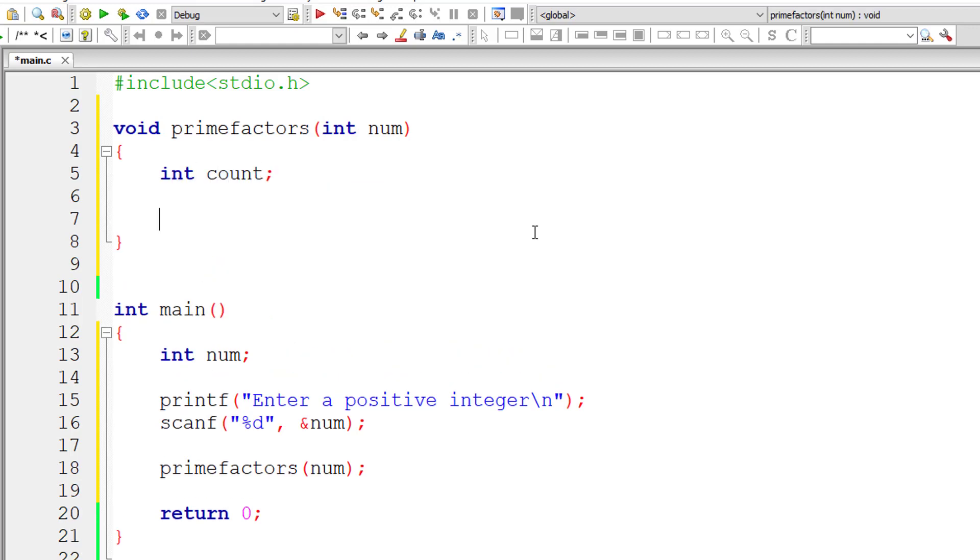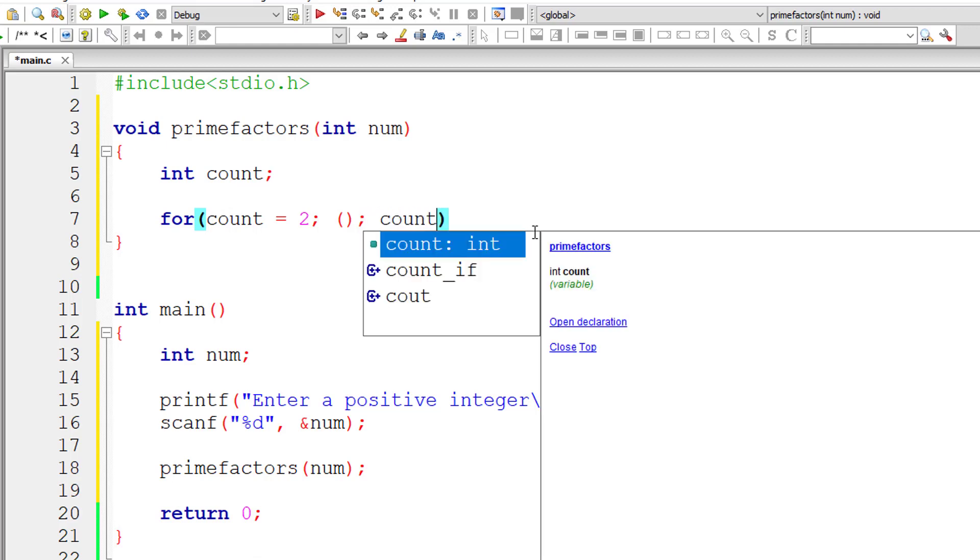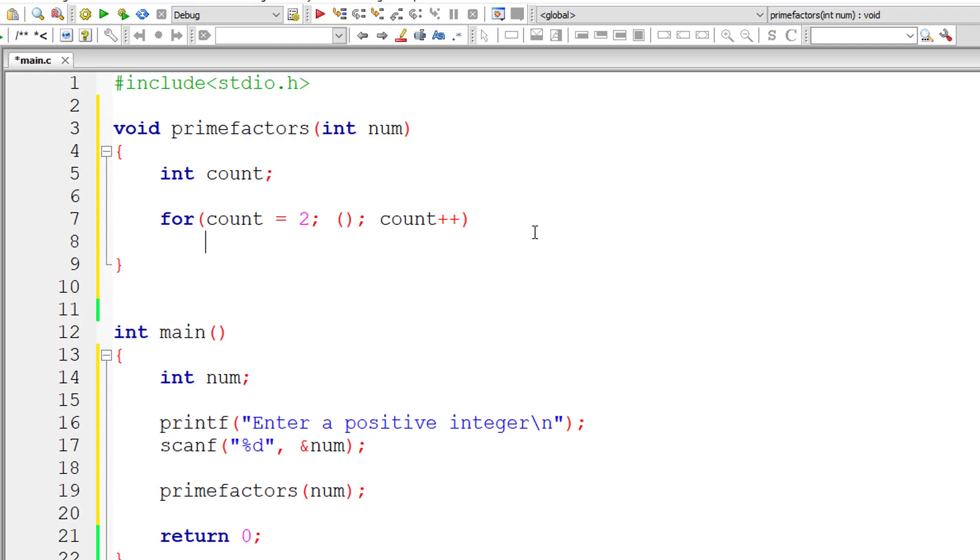So I'll take another variable, local variable count for loop counter. I'll assign 2 to count, the lowest prime number. So I'll leave this condition empty now. For each iteration of this for loop, I'll increment the value of count by 1.